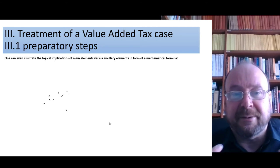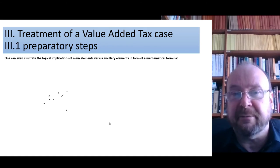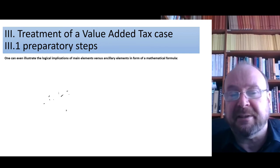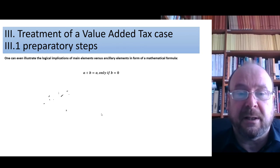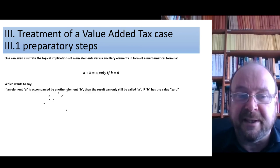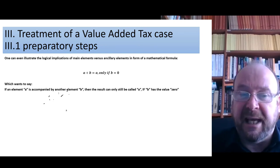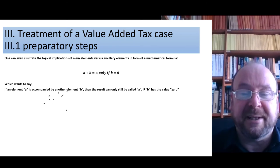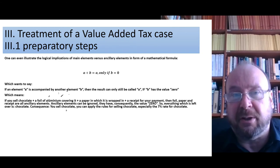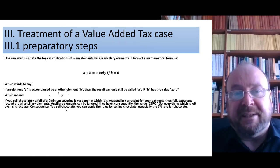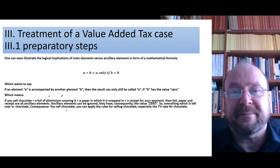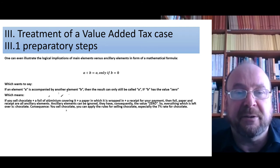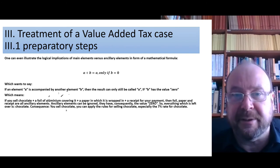You can illustrate the logical implications of having more than one main element using mathematics. For example: a plus b is only the same as a if b is 0. Translate that into value-added tax: if element a is accompanied by another element b, then the result can only still be called a if b has the value of 0. Things which can be ignored for value-added tax — which have a value of 0 — are only ancillary elements. Main elements cannot be ignored.